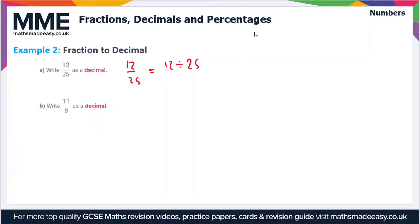Let's set up the bus stop method. We've got 25 into 12. Let's add some zeros in. First of all, how many times does 25 go into 1? The answer is 0, so we carry the 1 forward.